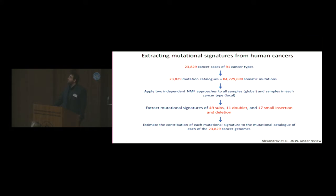About 5,000 whole genome sequences and about 18,000, 19,000 whole exome sequences. And this covers about 91 different types of human cancer, all of the common cancer types and some of the rare cancer types. Across these 24,000 cancer cases, we were able to identify 85 million somatic mutations.